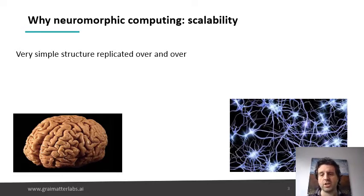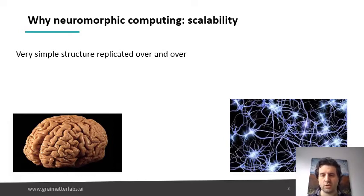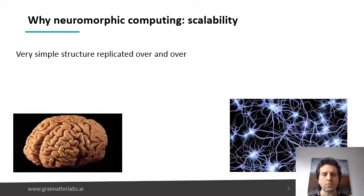We tend to think about models of computation that are rather centralized in their usage of the memory, while the brain actually has a structure where all the state is actually distributed across all the neurons, and that is why it's so scalable.